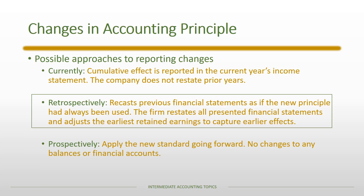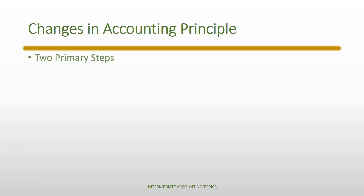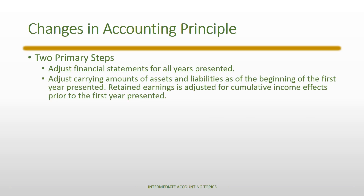When applying changes in accounting principle retrospectively, we recast previous financial statements as if the new principle had always been used and restate all presented financial statements, adjusting earliest retained earnings to capture earlier effects. There are two primary steps: first, adjust financial statements for all years presented; and second, adjust carrying amounts of assets and liabilities as of the beginning of the first year presented. Retained earnings is adjusted for any cumulative effect on income prior to the first year presented.